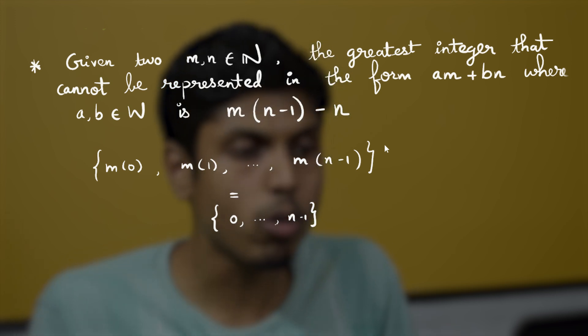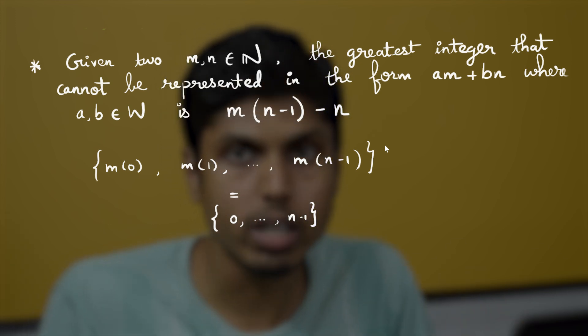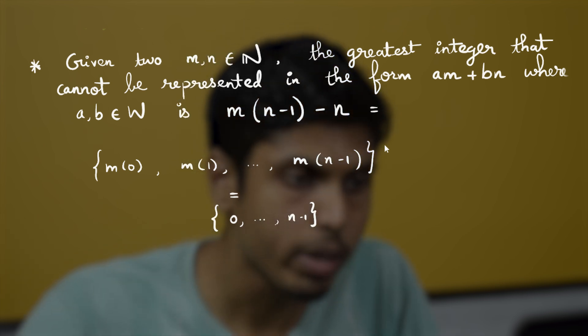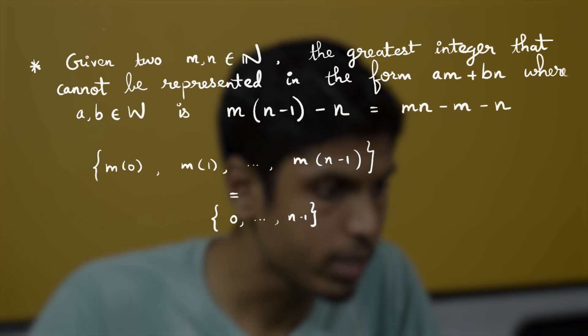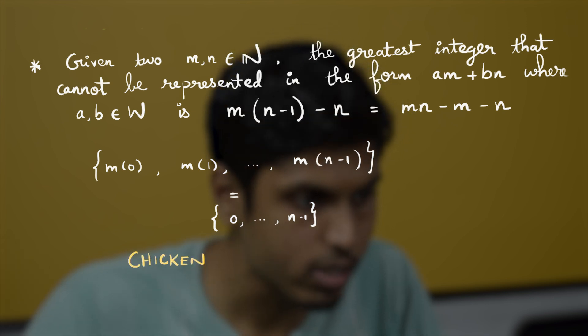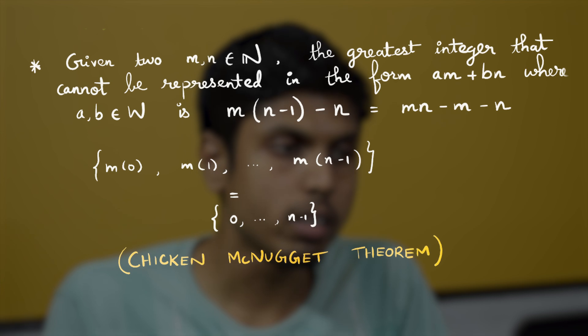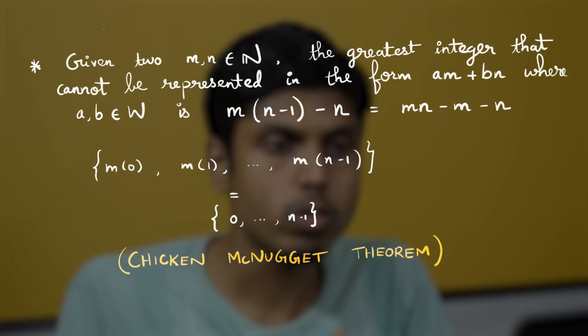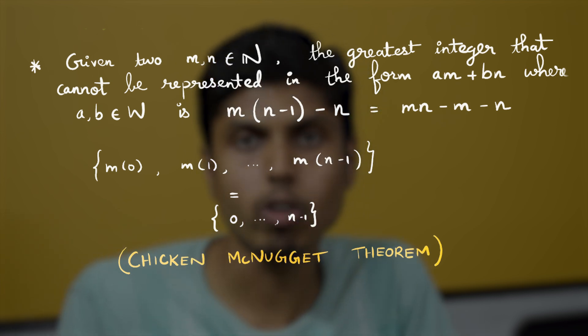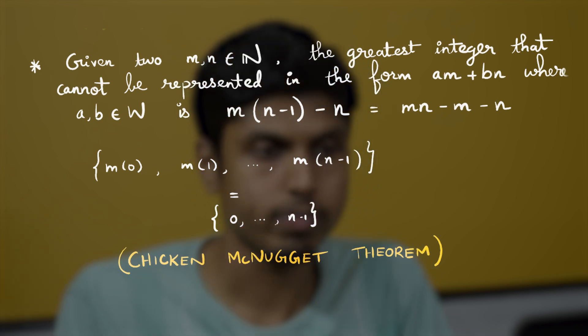This works due to the co-prime nature of m and n — in some order, those multiples cover all remainders. The formula mn − m − n is what is known as the Chicken Nugget Theorem, also called the Frobenius Coin Problem. The idea is about representing natural numbers as a linear combination of two co-prime non-negative integers. Feel free to share your ideas on the proof in the comments, and we will meet in the next video. Thank you, bye!